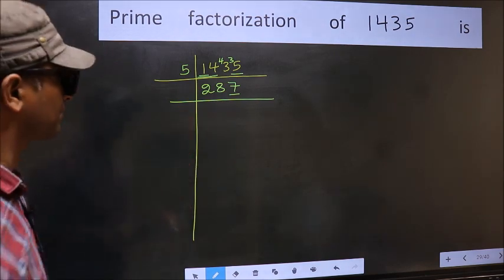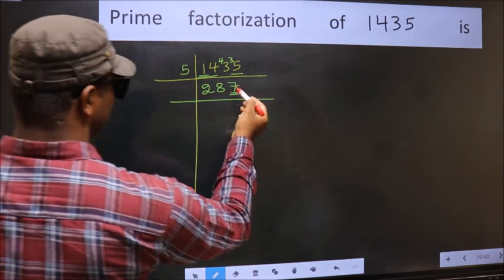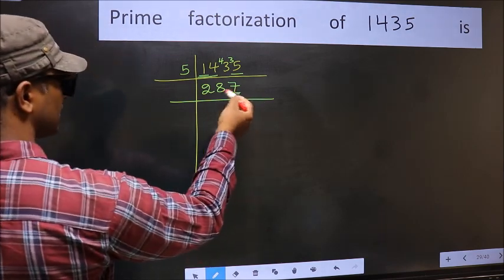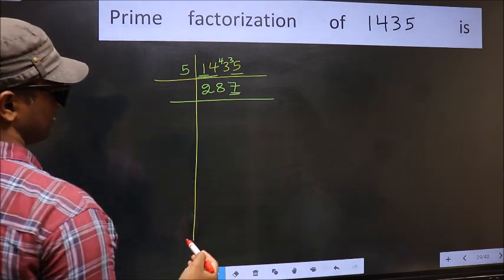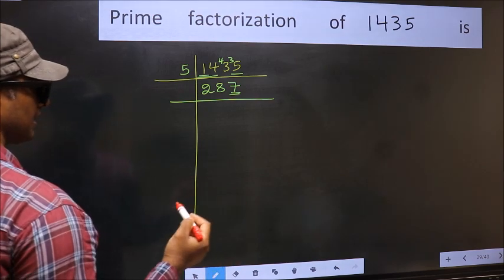Next prime number: 5. The last digit is neither 0 nor 5, so this is not divisible by 5. Next prime number is 7.